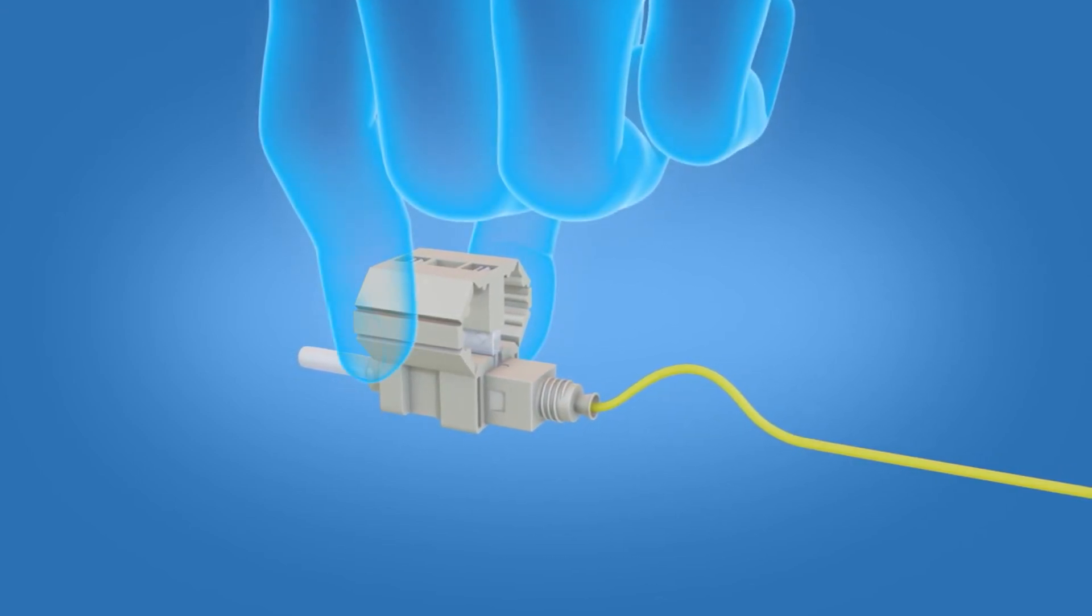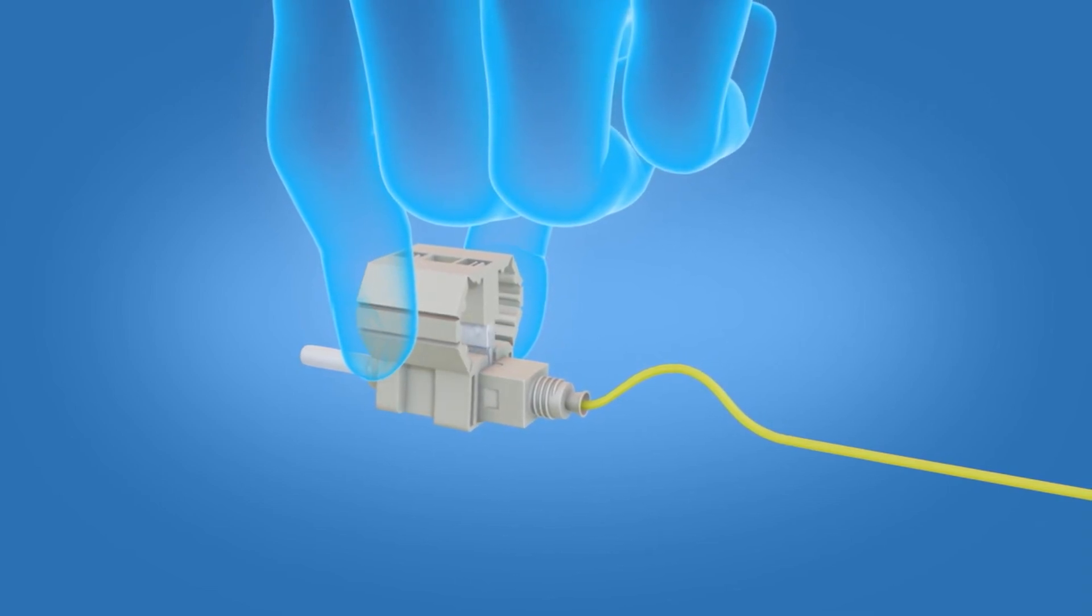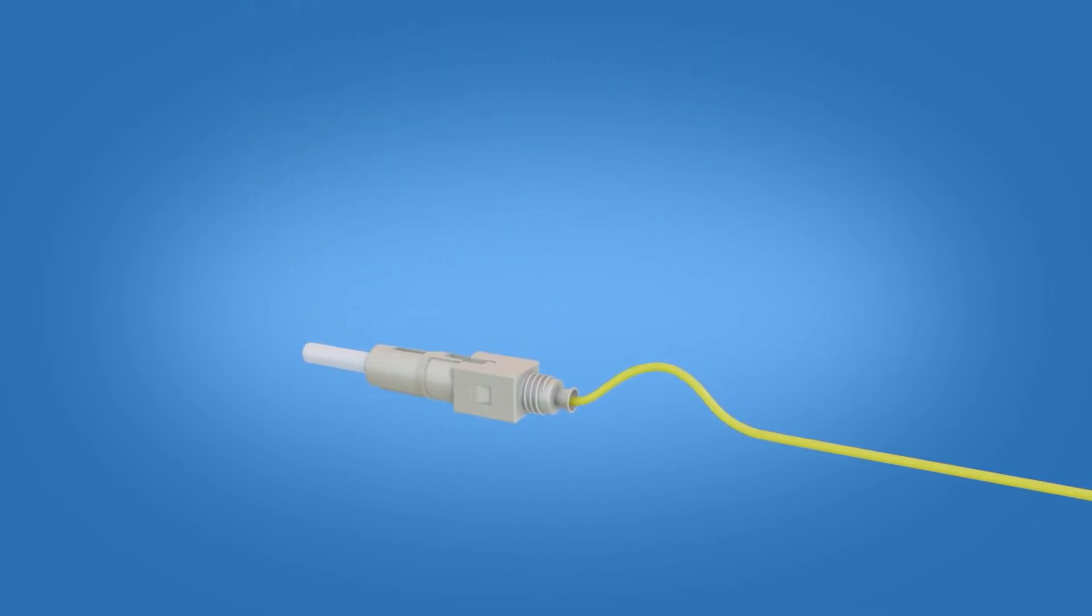Release and remove the wedge clip by squeezing both sides. Then push the boot onto the connector body.